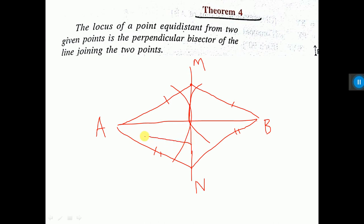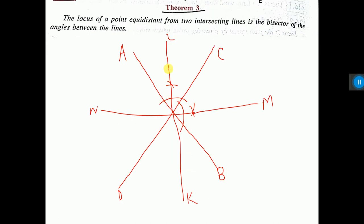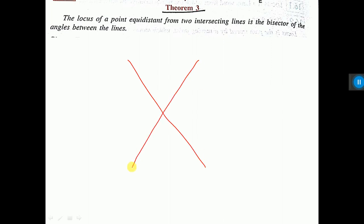Anywhere you take — let's say here — this distance equals this distance. This is the locus, because MN is the locus. Now the same thing applies to the previous theorem also. Any point on the bisector — so these are two lines, if you draw the bisector — any point on this bisector will be equidistant from the two lines. That means you draw a perpendicular on this line and a perpendicular on this line; these two distances will be equal. Similarly, let's say here is a point — you draw a perpendicular and here also you draw a perpendicular — these two distances will also be equal. Any point you take, the perpendicular distances to the two lines will also be equal.